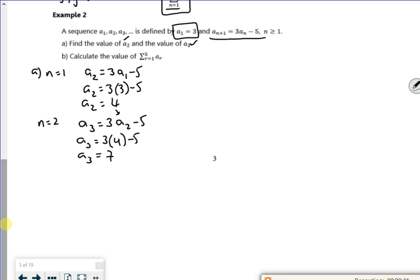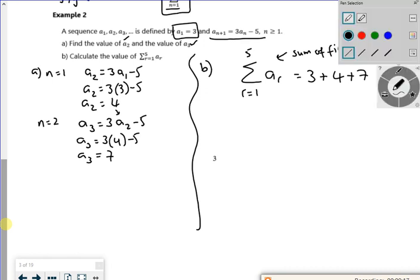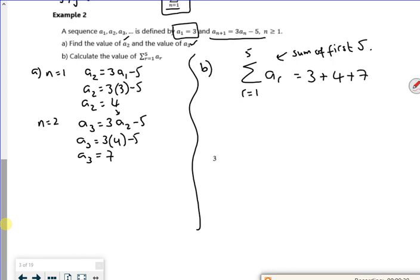Now part b. Part b wants the sum of, from r equals 1 to 5, ar. So it wants the sum of the first five numbers. So I know that's going to be the three that I started off with, the four that I got, the seven that I got. But what I need to do now is work out the others. So just very quickly, because I've only got the first three terms and he wants me to do the first five terms, I'm just going to work out what a4 is.